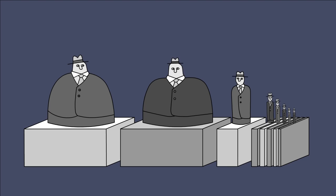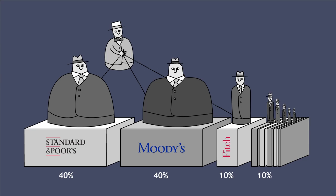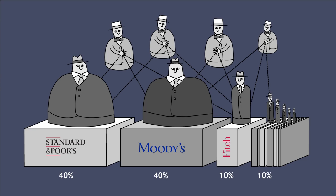Currently, there are only three key global rating agencies – Standard & Poor's, Moody's and Fitch. These big three share 90% of the global rating business. Moreover, major shares of these companies belong to the same large investors, so there is virtually no competition.